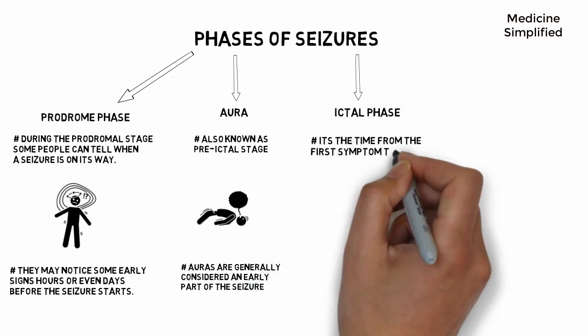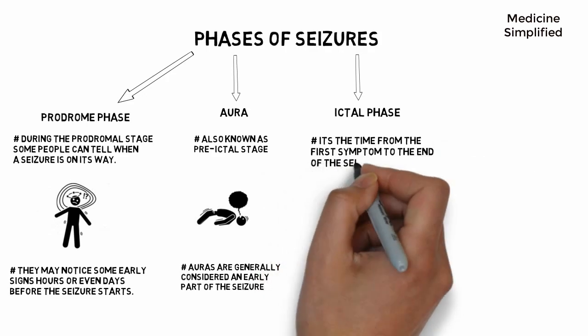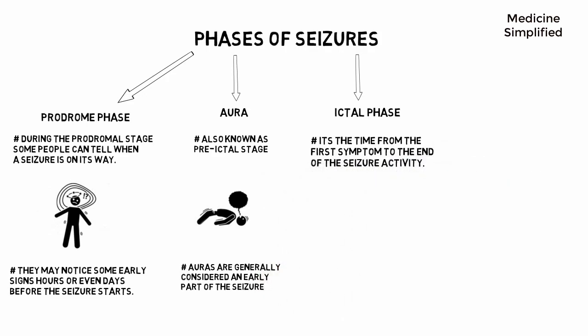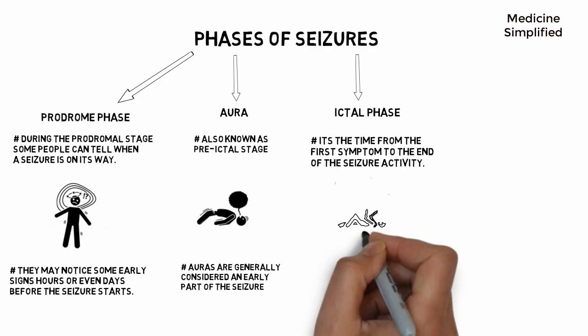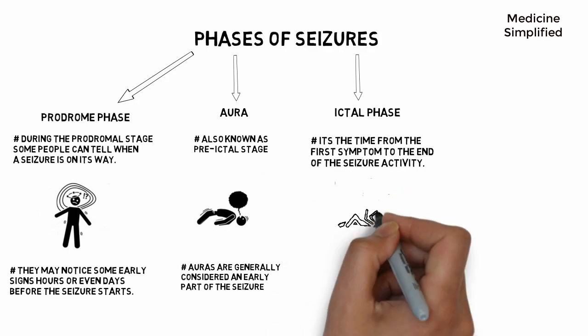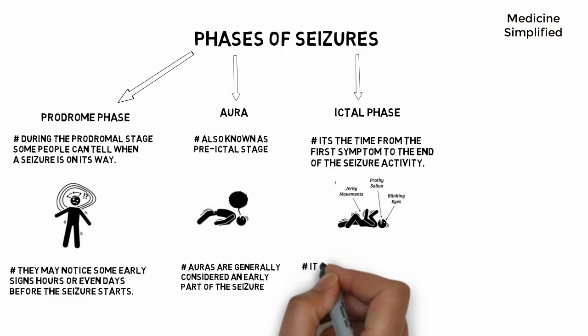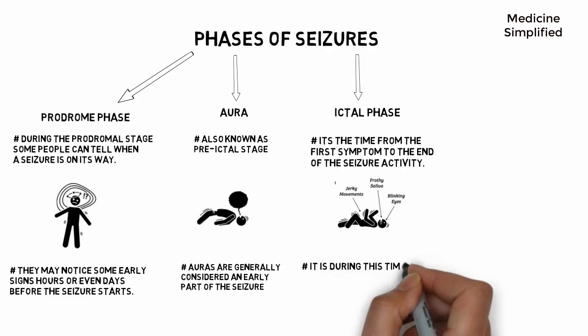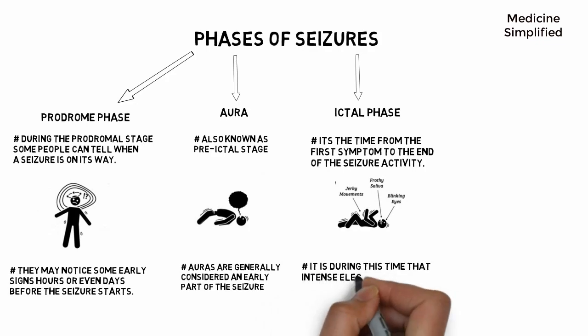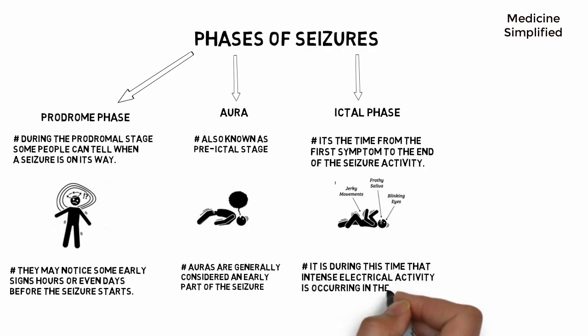The third one is the ictal phase. It is the time from the first symptom to the end of the seizure activity — the duration between the start and end of the seizure. It is during this time that intense electrical activity is occurring in the brain.